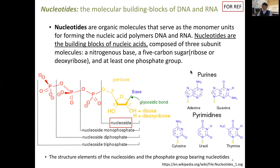This is reference material, but I want to go through a little bit of detail on nucleotides, which are the molecular building blocks of DNA and RNA. Nucleotides are organic molecules that serve as monomer units to form the nucleic acid polymers, such as DNA and RNA. These are the real building blocks, composed of three subunit molecules.